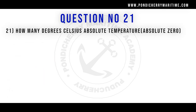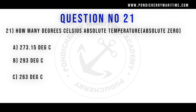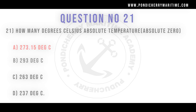Twenty-first question. How many degrees Celsius is absolute temperature at absolute zero? Option A. 273.15 degrees Celsius. Option B. 293 degrees Celsius. Option C. 263 degrees Celsius. Option D. 237 degrees Celsius. Correct answer is option A: 273.15 degrees Celsius.